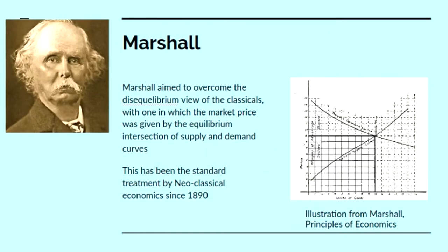Now, this was obviously an ideological problem for capitalist economics, and it was resolved by Marshall, who aimed to overcome the disequilibrium view of the classicals, with one in which the market price was given by the intersection of supply and demand curves. Previously, the classical economists had said the equilibrium price is the labour value, and supply and demand are disequilibrium phenomena.